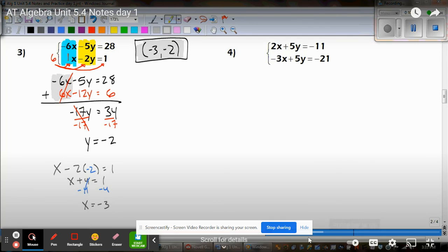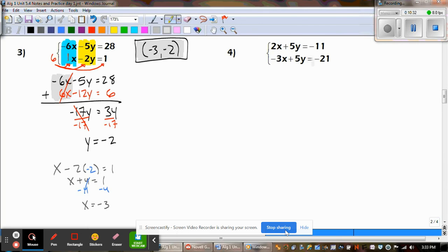Okay, and you should have gotten X equals negative three, which gives us the point negative three, negative two.